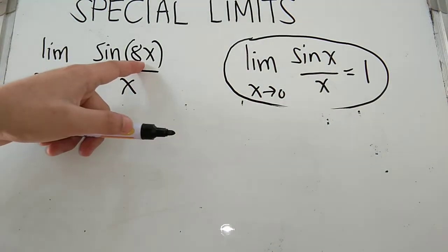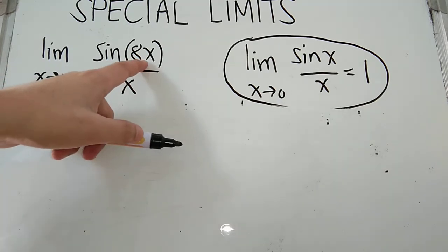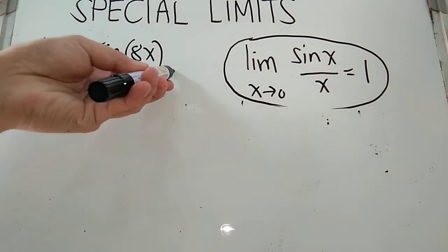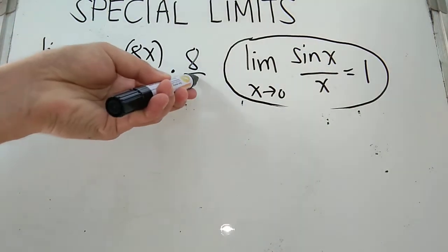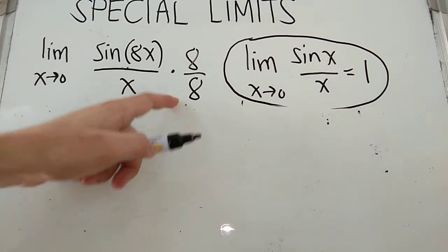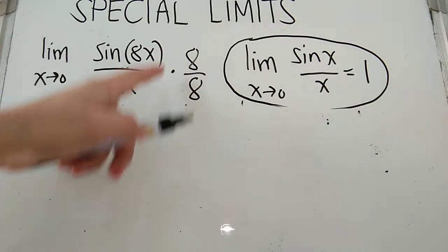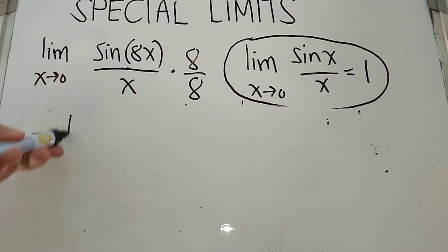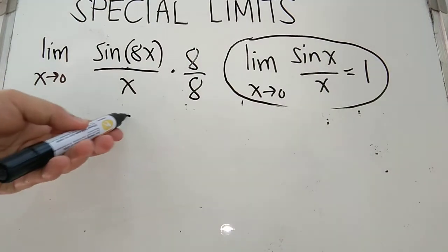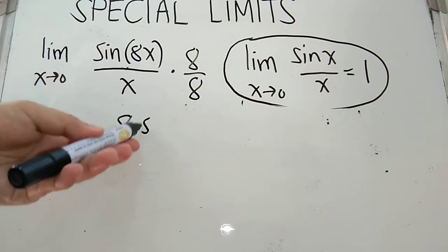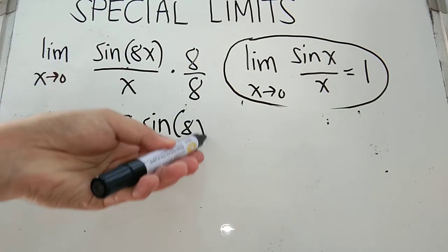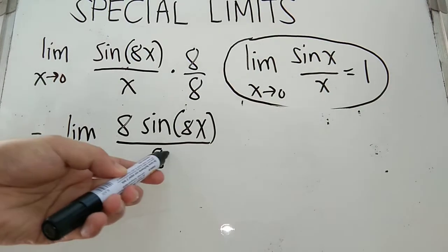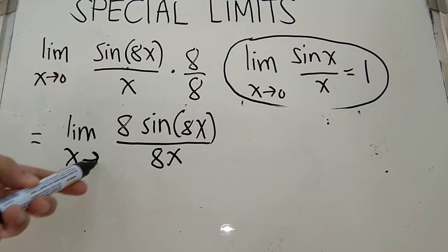So our function inside sine is 8x. If this is 8x, then our denominator should also be 8x. How to do that? By multiplying both numerator and denominator with 8. This is valid anyway — 8 over 8 is 1, and multiplying by 1 brings us back to our original function. Simplifying, this is now the limit of 8 sin 8x over 8x as x approaches 0.